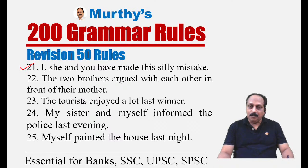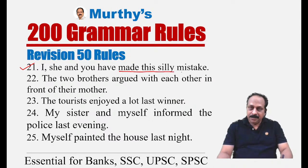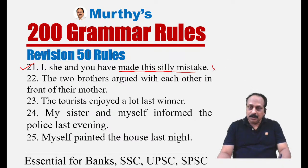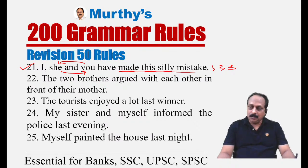Sentence twenty-one: 'I, she, and you have made this silly mistake.' The clue is 'made this silly mistake' — you are admitting or confessing. When admitting, the correct order is first, second, third person: 1-2-3. So the correct order is 'I, you, and she.' The sentence should read: 'I, you, and she have made this silly mistake.'